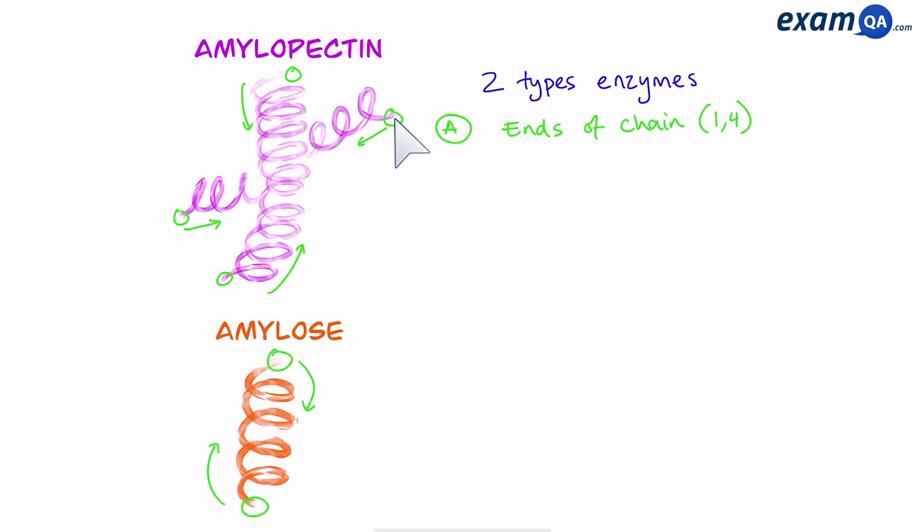Since amylopectin has branches we can have four enzymes working on it. Amylose does not have any branches so it only has two enzymes working at the same time. However the second type of enzyme breaks down the branch points, so the 1-6 bonds. Amylopectin therefore will be further broken down.